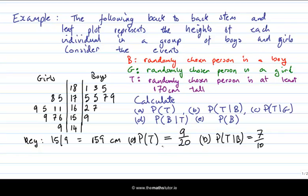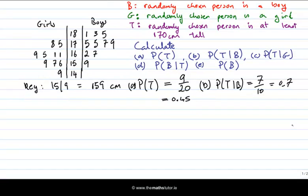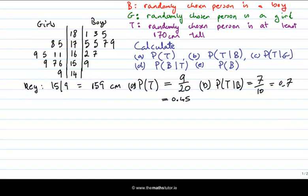Notice that these two probabilities are different: P(T) = nine over twenty, which is 0.45, while P(T|B) = 0.7. That's to be expected — if you restrict yourself just to the boys, the probability that a person is above a certain height should differ from the whole population. Next, let's calculate P(T|G).